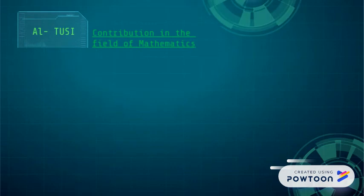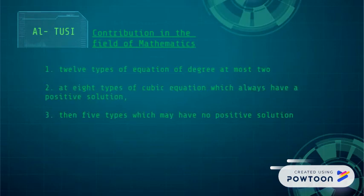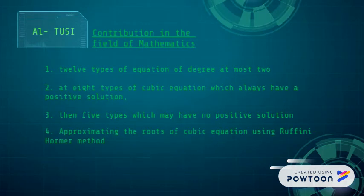Al-Tusi then went on to give what we call the Ruffini-Horner method for approximating the roots of cubic equations. Although this method has been used by earlier Arabic mathematicians to find approximations for the nth root of an integer, Al-Tusi is the first that we know who applied the method to solve general equations of this type.